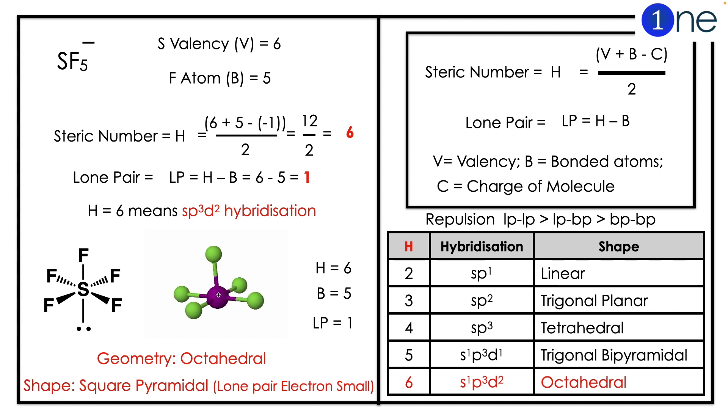To find the hybridization, you should know the steric number, which is H equals V plus B minus C by 2. Here, valence of sulfur is 6, fluorine atom is 5. If you substitute in the formula, you have steric number equals 6 plus 5 minus 1 divided by 2, which equals 6.